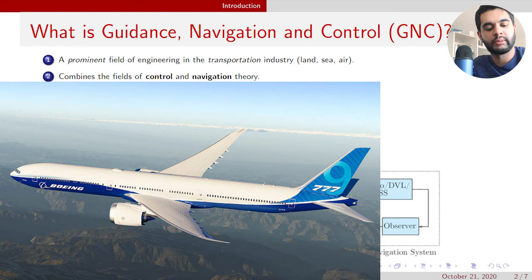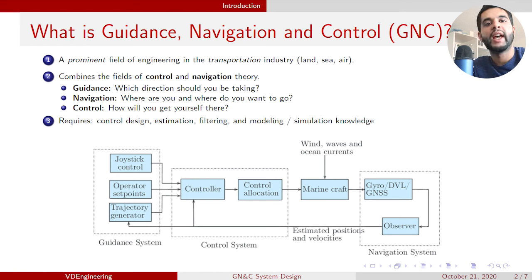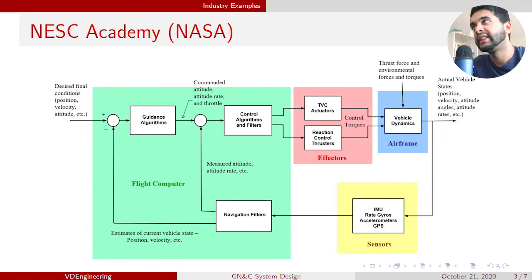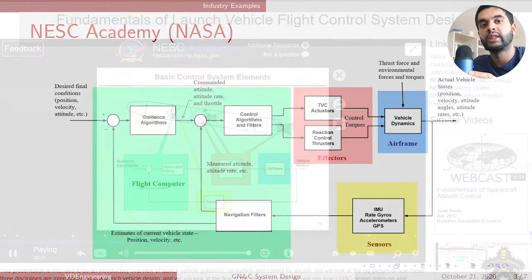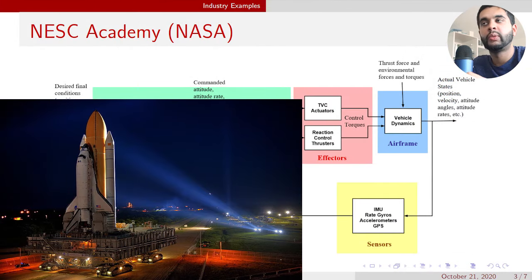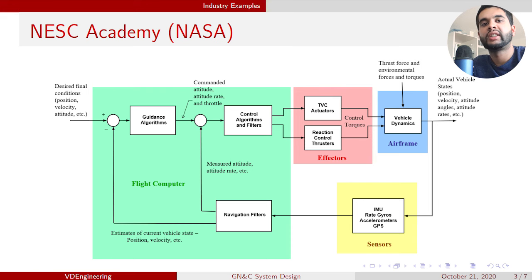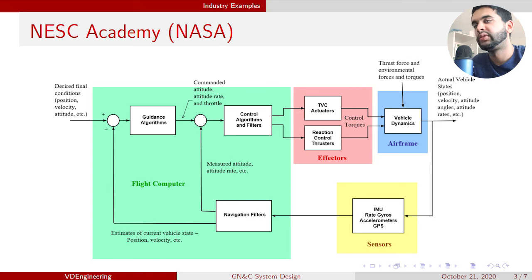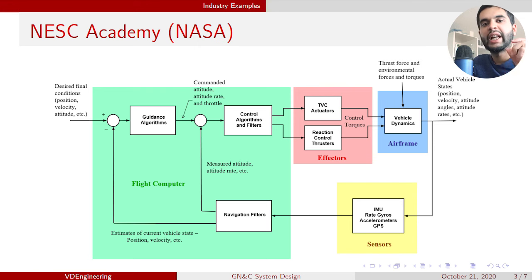You need knowledge of control system design, estimation, filtering, modeling, and simulation. Looking at this picture from the NASA Engineering Safety Center (NESC), this is the standard GNC algorithm for a launch vehicle. You have the flight computer calculating guidance commands, the effectors as vehicle actuators, the vehicle airframe, and sensors like an IMU, GPS, gyroscope, and accelerometer. These send commands back to the Kalman filter, which feeds the navigation system, forming a complete GNC loop.